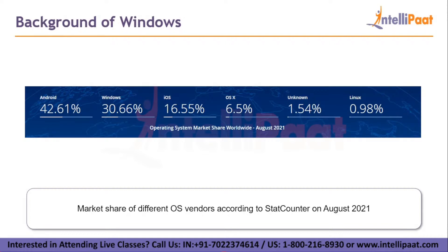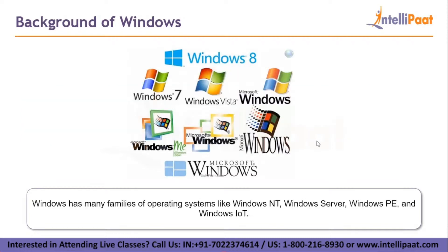Android leads the way, taking 42.61% of the market share. But this may mislead you because Android is for mobile users and this video concentrates on the operating system for desktops and PCs. So Windows stands at 30.66% and Linux is below 1%. Windows has many families of operating systems like Windows NT, Windows Server, Windows PE and Windows IoT. It also has operating systems for mobile devices, but our focus is on the PC Windows editions.